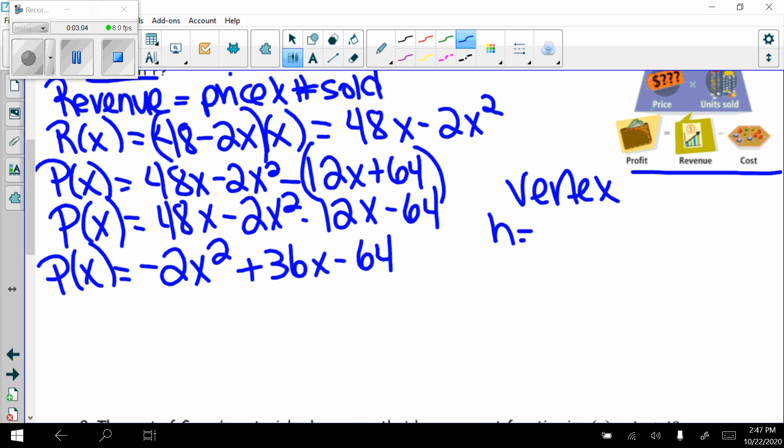H equals negative B divided by 2A. So H equals negative 36 divided by 2 times negative 2. Negative 36 divided by negative 4, H is equal to 9. So on my vertex, I know my x value is 9.